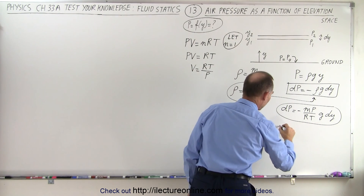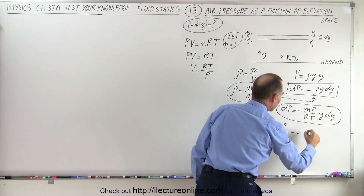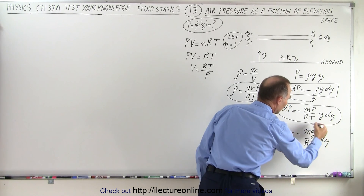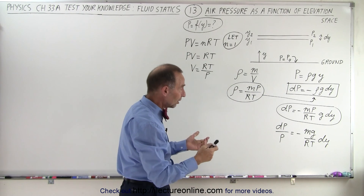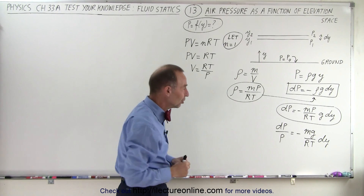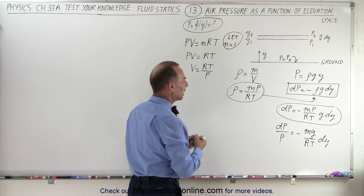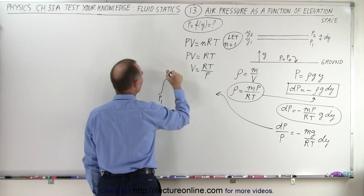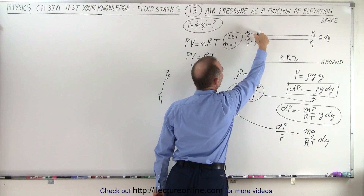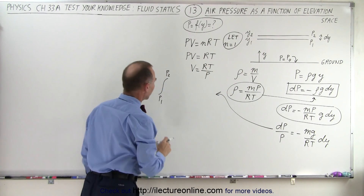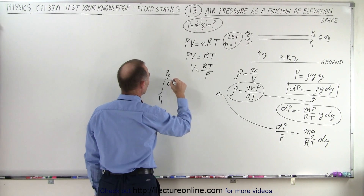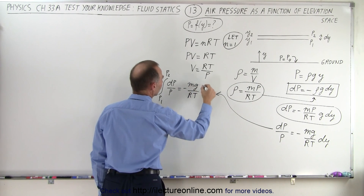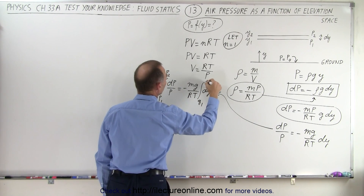Now we can separate the variables. We write dP over P equals negative mg over RT times dy. Notice that the quantity mg over RT is simply a constant: m is a constant, g is a constant, R is a constant, and T is a constant at a particular location in the atmosphere. So we're ready to integrate both sides. We'll integrate the left side from P1 to P2 — from one location in the sky to another — giving us the integral of dP over P.